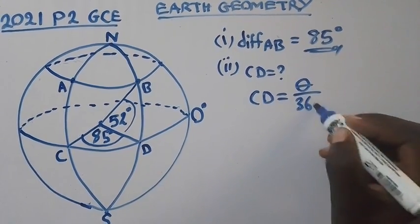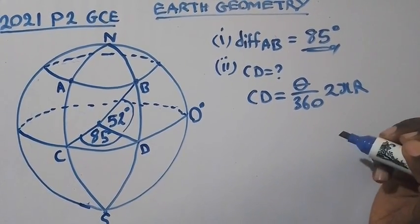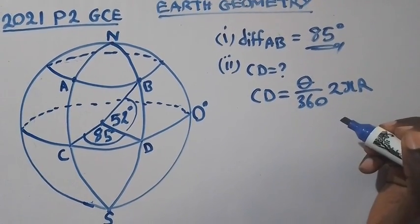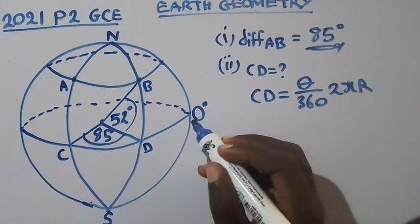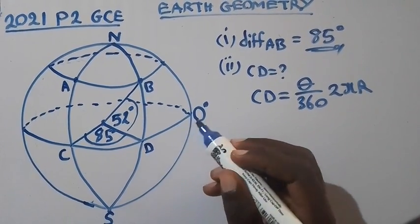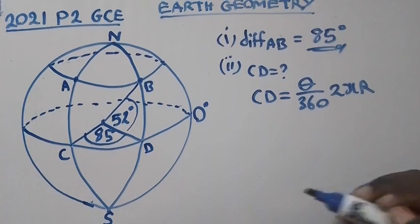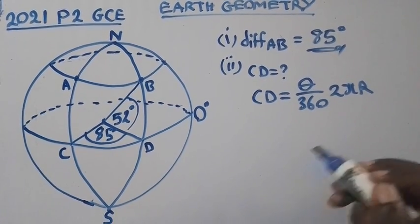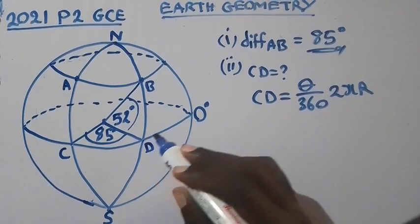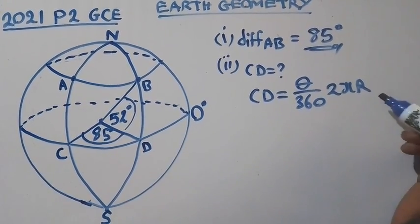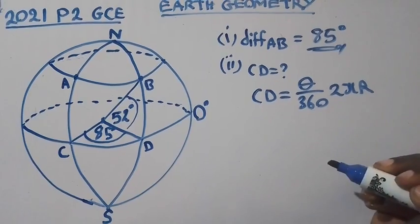Theta over 360 times 2 pi R, just like that. No need of including cos. This is the great line. Even if you include cos, cos 0 on the calculator will give you 1. Now 1 times any number will give you the same number. So we just end here. This is the latitude, yes, but it is a great line, so that's why cos isn't in this formula. But if you want, you can include cos, it will give you the same answer.